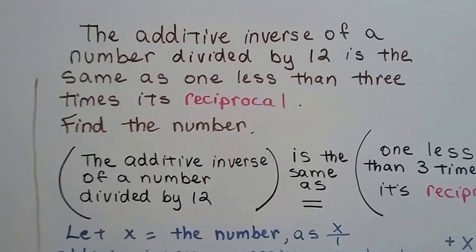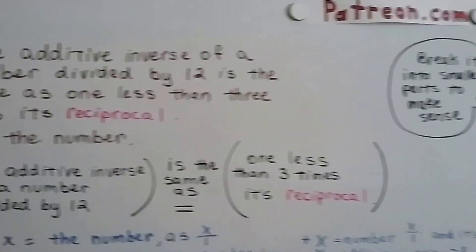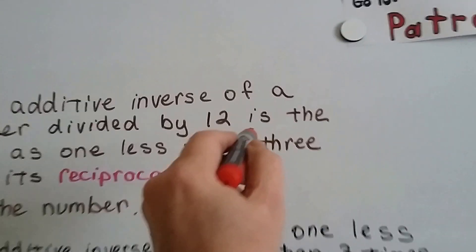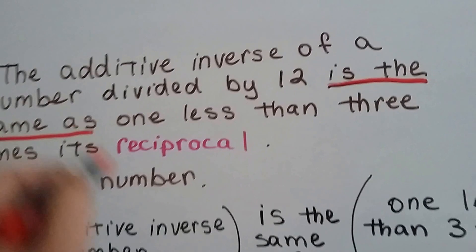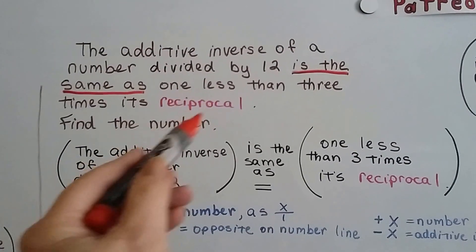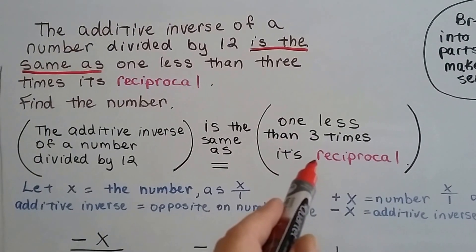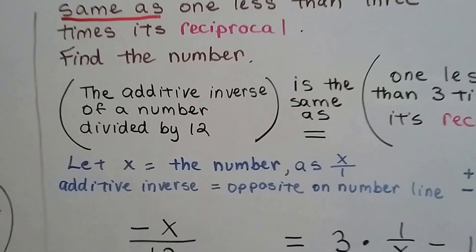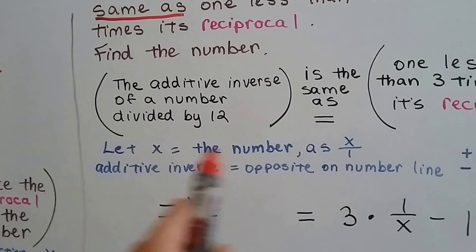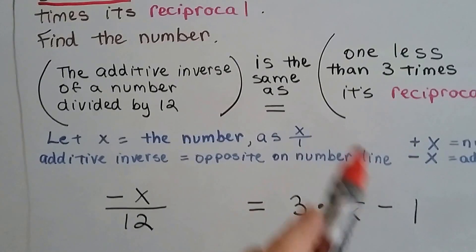Now let's look at this famous one: the additive inverse of a number divided by 12 is the same as 1 less than 3 times its reciprocal. Find the number. We identify 'is the same as' as our equal sign, giving us two parts. Additive inverse and reciprocal — let's break those down. If x is our number, written as x over 1, then its reciprocal is 1 over x.